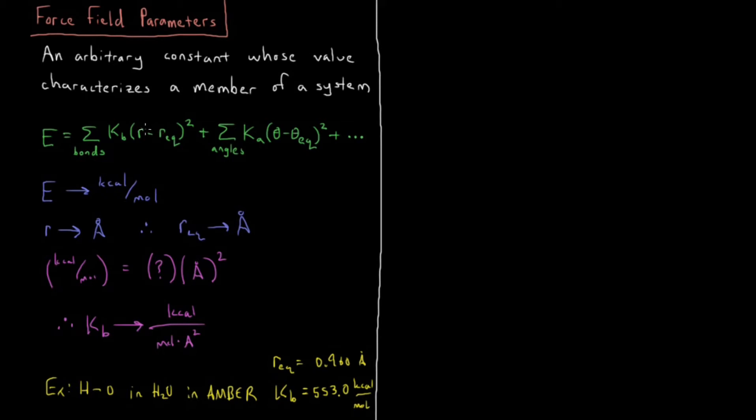Those are both fairly typical values in terms of the order of magnitude. You generally expect bond lengths to be around an angstrom, somewhere between 0.9 and 1.5 angstroms, maybe a little longer if it's something like chlorine or bromine involved in the bond. And the spring constants for bonds, this one's a little bit towards the high end, but typically they are in the hundreds of kcal per mole. That's the typical stiffness of a chemical covalent bond.